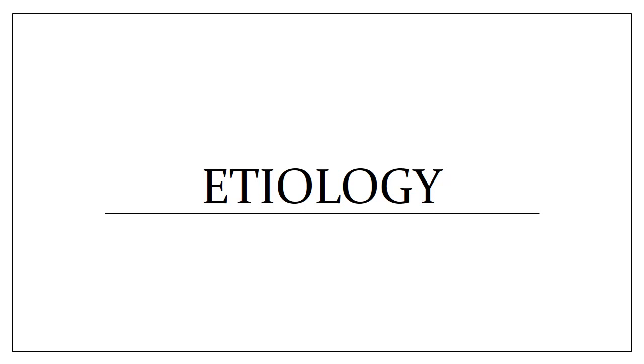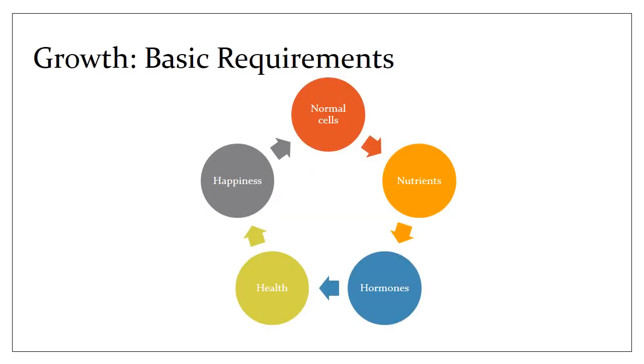Now what produces short stature? To understand that you need to look at growth's basic requirements. The cells should be normal, they should be getting good nutrients in a proper hormone milieu with good health and happiness. All that would in synchronization produce proper stature. An aberrancy may produce short stature.